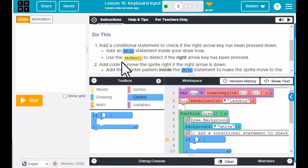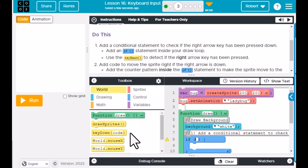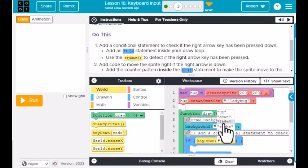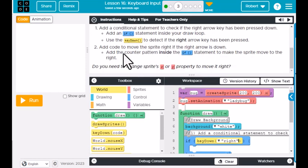Then we're going to use the key down to detect if the right arrow key has been pressed. Notice we're focusing on the right arrow key. We're going to go to World and we have key down. Drag that in there and see how it gives us the options—it says right. So we probably more than likely want to select right. Then add code to move the sprite to the right if the right arrow is down. Add the counter pattern inside the if statement to make the sprite move to the right.